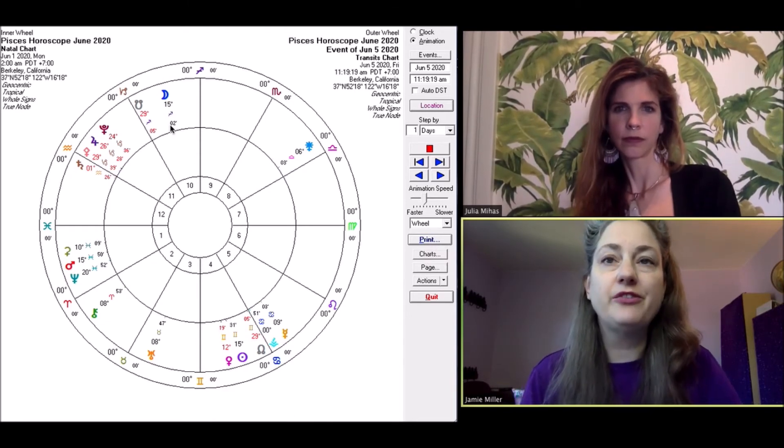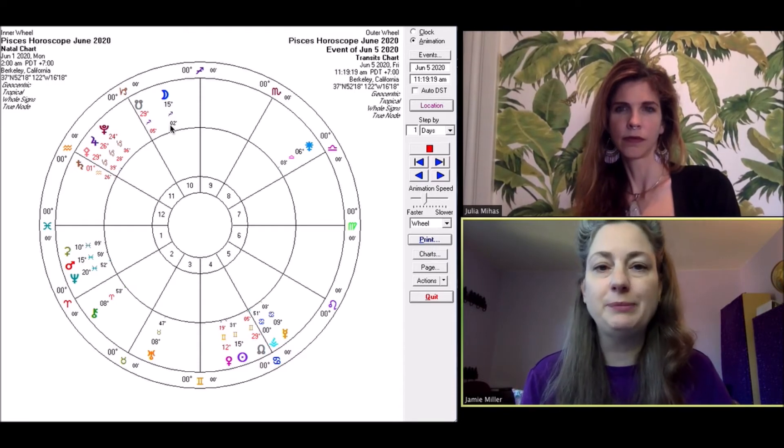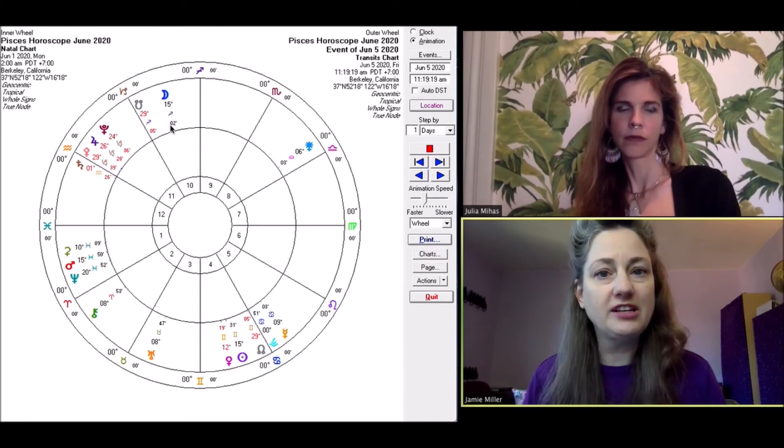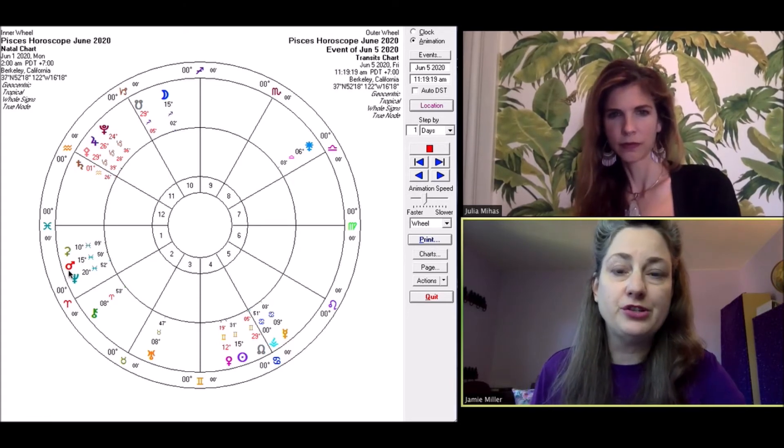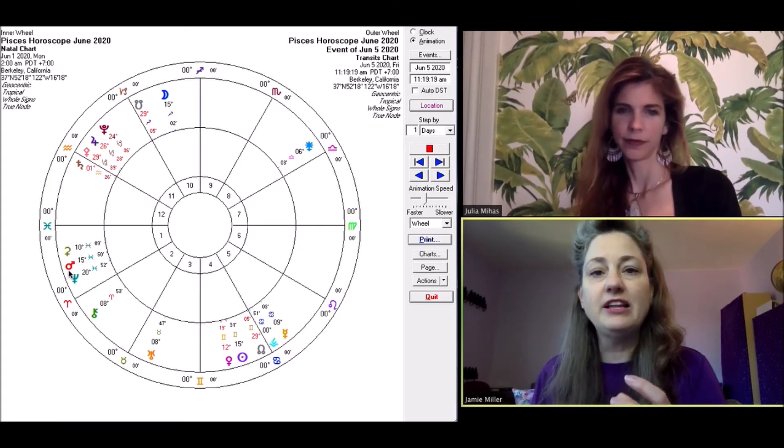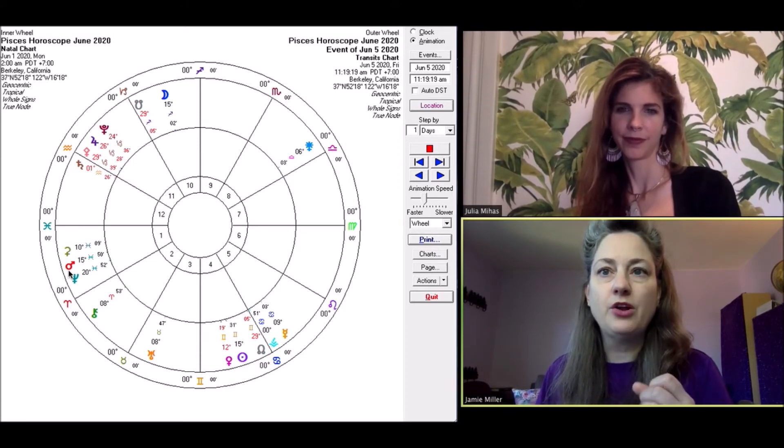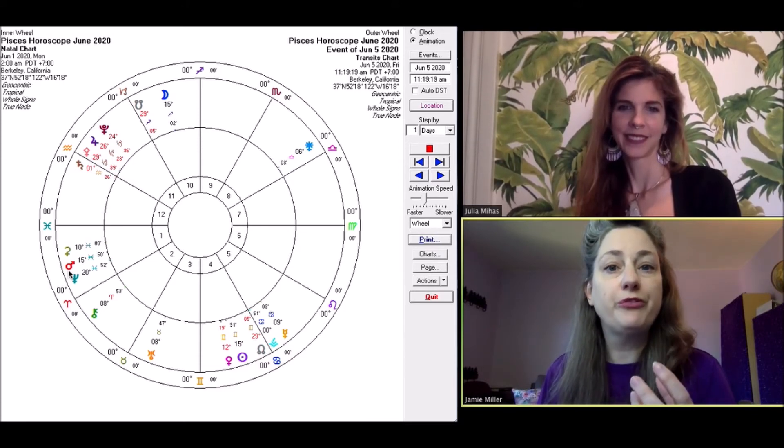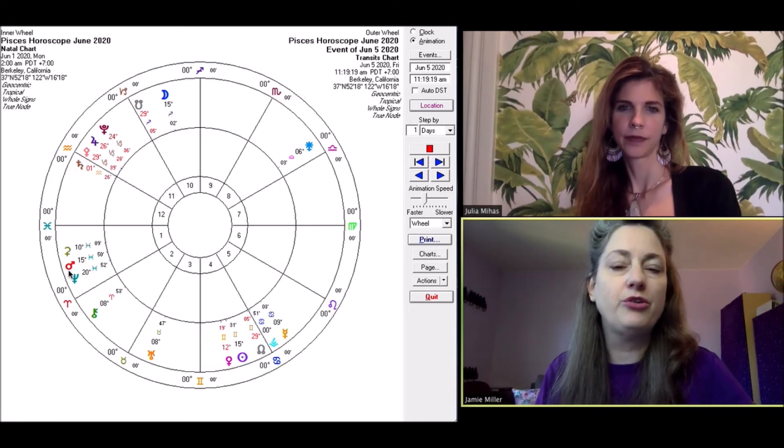Now the 10th house of career is a heck of a place to have an eclipse because an eclipse, especially a lunar eclipse, shows you your shadow. And because it's lunar, it's going to be emotional in nature and because Mars is involved, there may be anger involved. So you may feel angry, like you need to assert yourself, like you need to, you know, be very willful under this eclipse. And you may really feel that in your career domain.